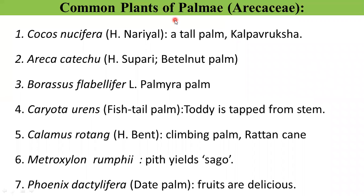Some common plants belonging to family Palmae: first, Cocos nucifera — called Naryal in Hindi, also called Kalpavriksha. Second, Areca catechu — called Supari in Hindi, commonly known as betel nut palm. Third, Borassus flabellifer — also called palmyra palm. Fourth, Caryota urens — commonly called as fish tail palm, from which toddy is tapped from the stem. Fifth, Calamus rotang — also called climbing palm or latan palm, called 'betta' in Kannada. Metroxylon rumpii — from this palm tree, sago is extracted. Phoenix dactylifera — called the date palm, or Kharjura, with delicious fruits.